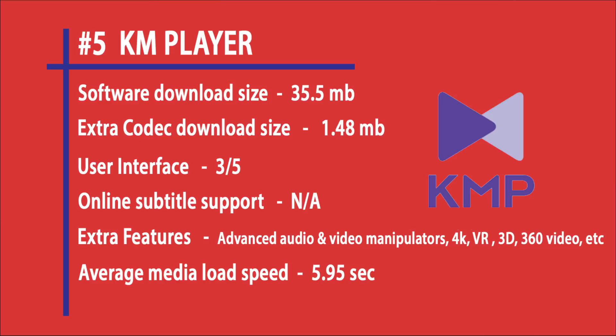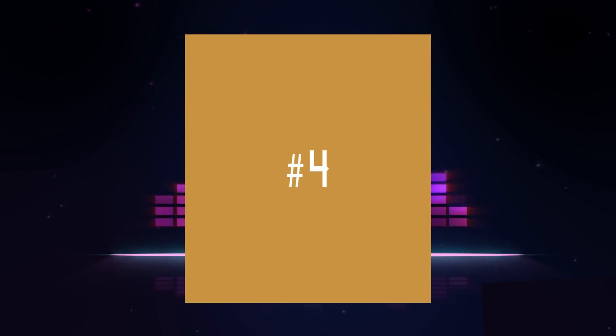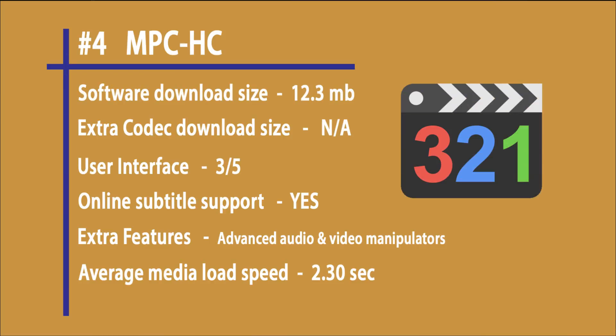KM Player's average load speed is 5.95 seconds, which is really slow. Moving on to fourth position, MPC-HC — it is an open source media player. Software size is around 12.3 to 13 MB, no extra codecs to download. User interface is good, so 3 out of 5. It has online subtitle support. Main features are advanced audio and video settings. Average load speed is 2.3 seconds.